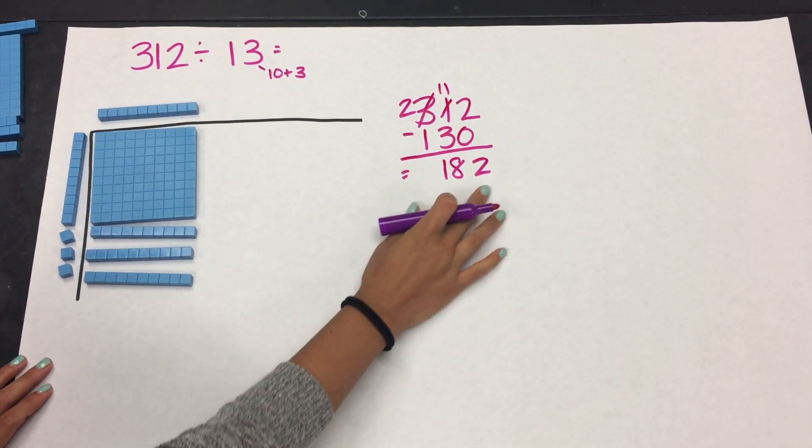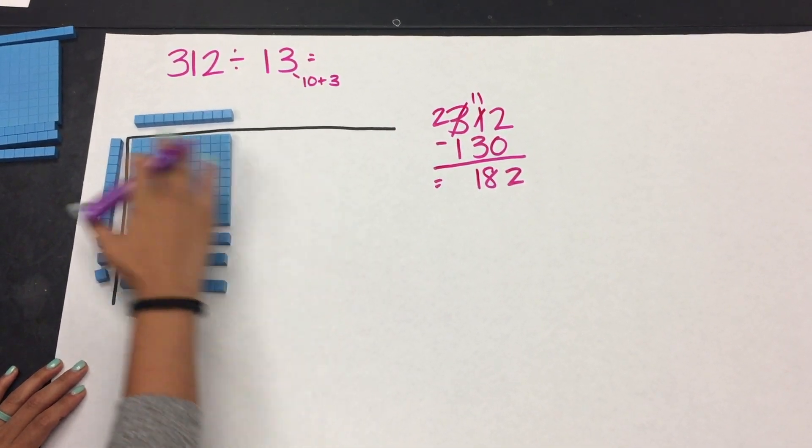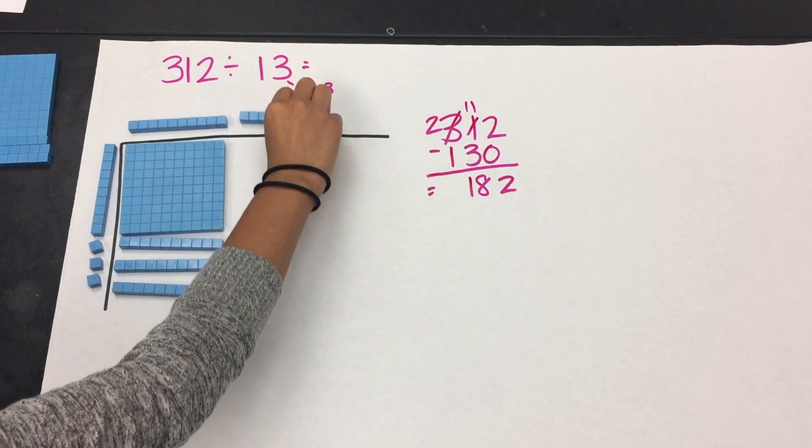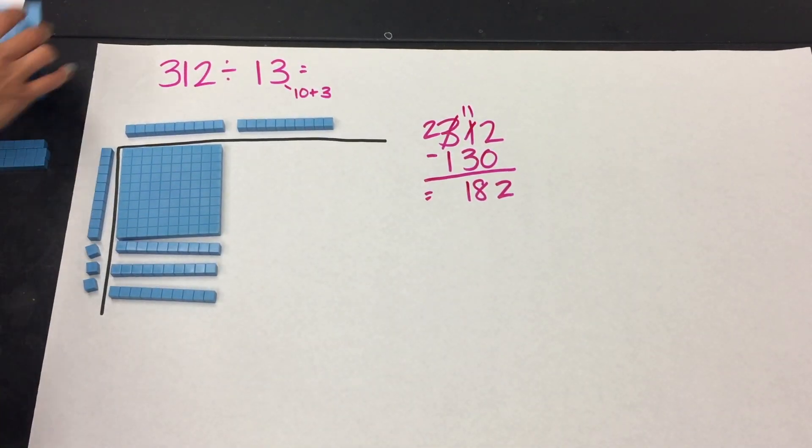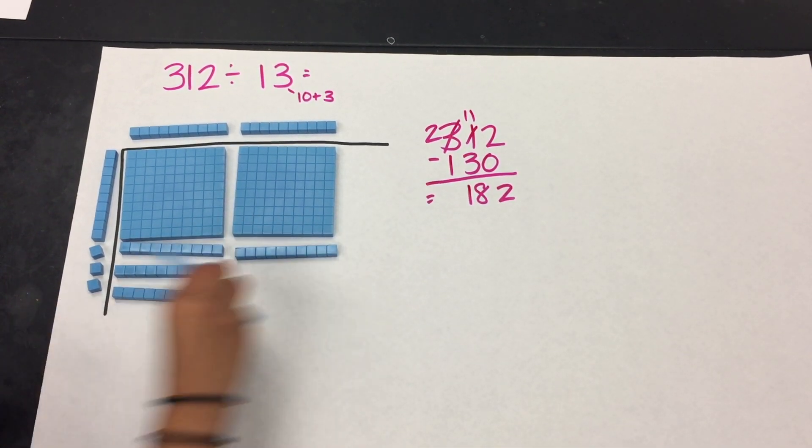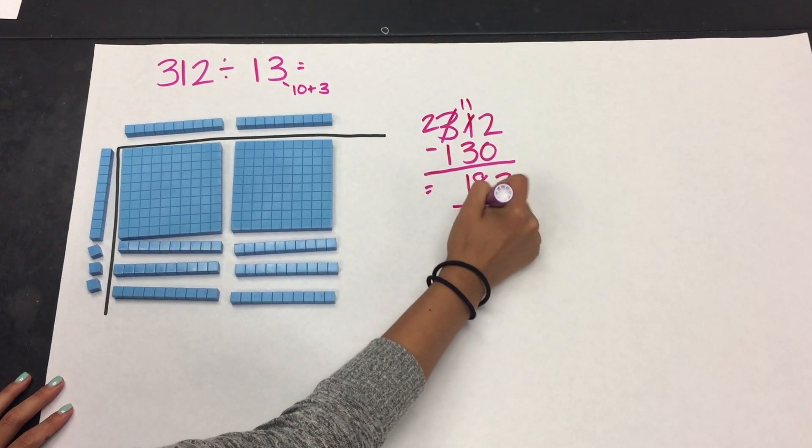So far I still need to have an additional 182 in the middle to equal 312. So I know I have enough to put down another 10 for my quotient because that would give me an additional 130. So now I'm going to subtract that from what is remaining.